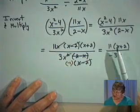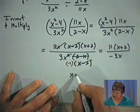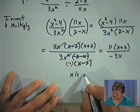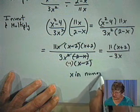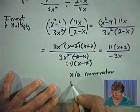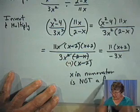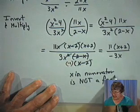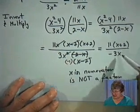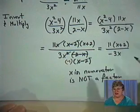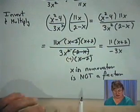Look again — is there anything else we could simplify? Don't be tempted to cancel the Xs, because the X in the numerator is not a factor. I keep emphasizing this because it is an error that happens over and over again: canceling quantities that are not factors.